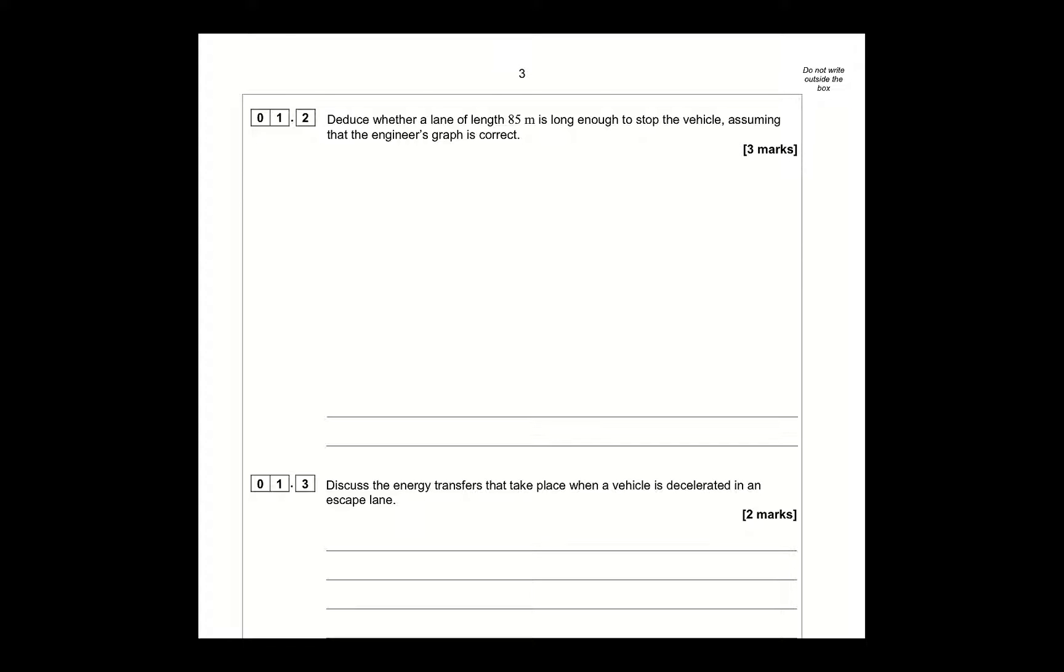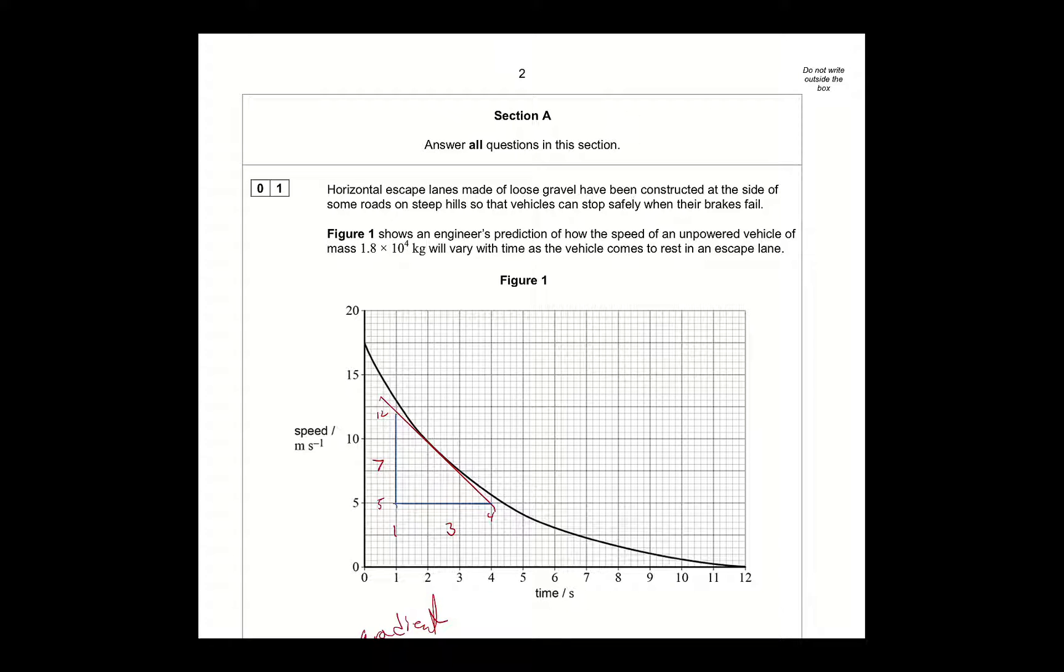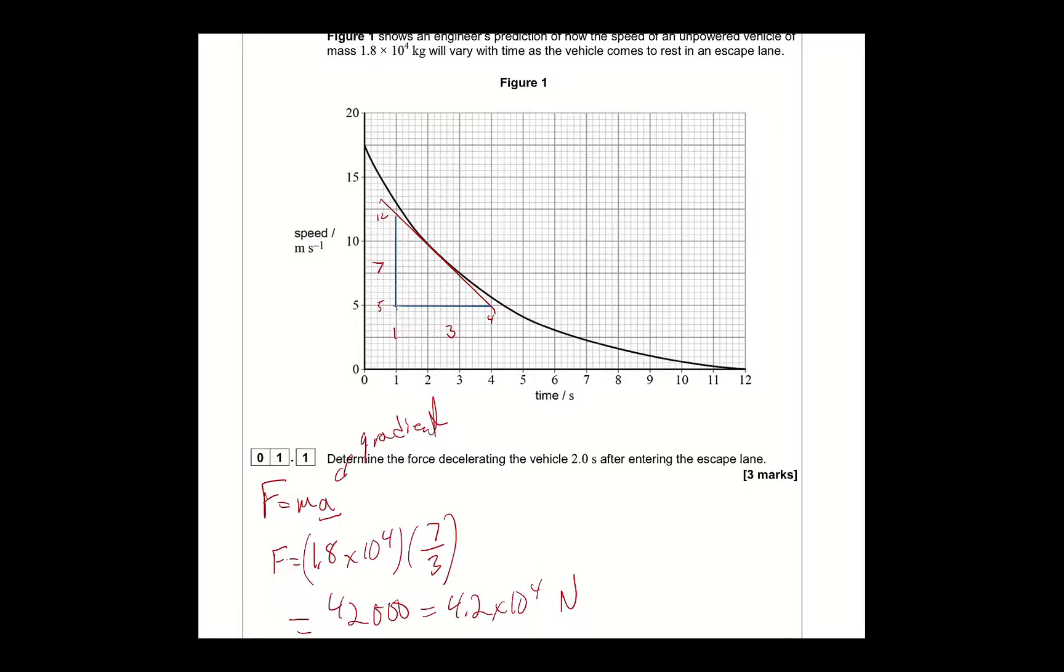So, deduce whether a lane of 85 meters is long enough to stop the vehicle, assuming that the engineer's graph is correct. So, for this, if you've got a velocity time graph, what you need to do is find the area under the curve, and if it is more than 85, it's not long enough, if it's less than 85, then it is. So, I'm going to start just by... So, if I look here, this is... So, one big square... So, a 4 by 4 square like that is 10 meters, 5 by 2.